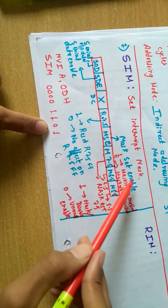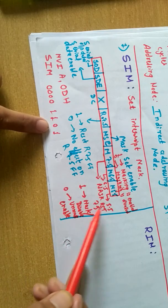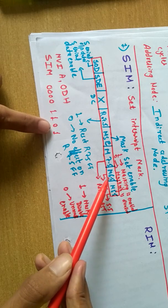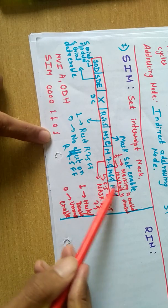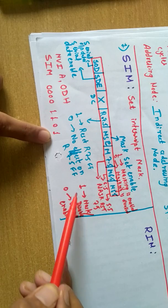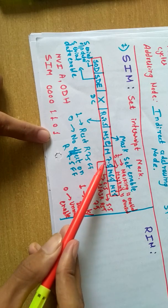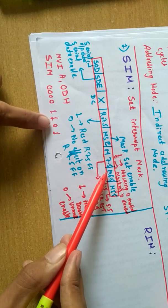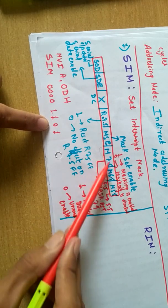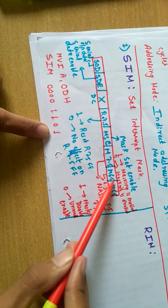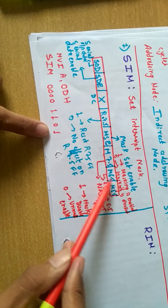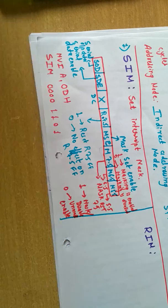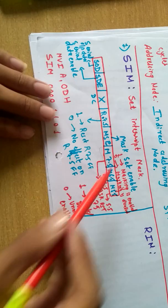As per our requirement we can load anything. We have loaded 1101. One means mask set is enabled, then this one means we have masked RST 7.5, 6.5 is not masked, but 5.5 is masked. We have disabled or masked 7.5 and 5.5 and enabled the 6.5 interrupt.